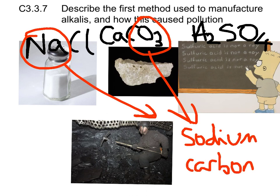Sodium carbonate is an alkali, and it can be used to make things like glass and for other industrial processes which are quite important. The Leblanc process was able to produce thousands and thousands of tons of sodium carbonate, so we didn't have to collect urine or burn birchwood trees or seaweed anymore.